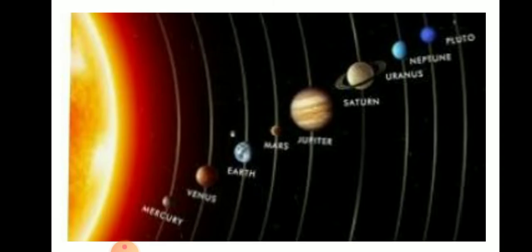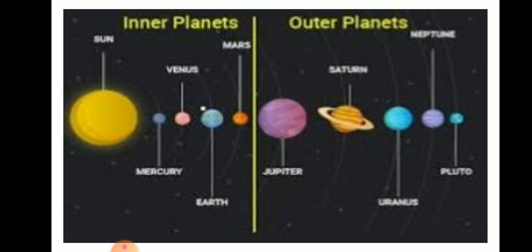Let us now discuss about the solar system. The sun, together with the eight planets, moons, and other heavenly bodies that revolve around the sun, form a solar system. The eight planets are: Mercury, Venus, Earth, Mars, Jupiter, Saturn, Uranus, and Neptune.